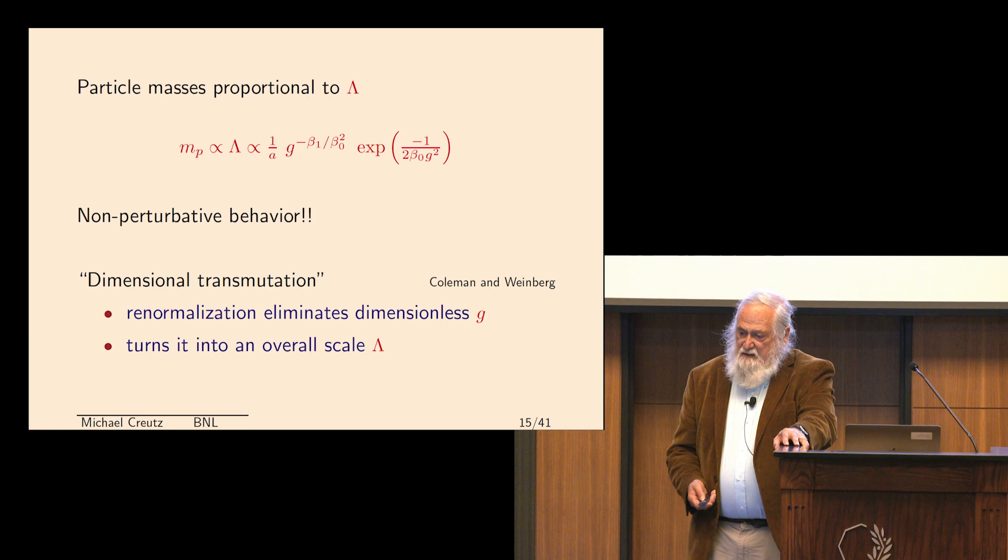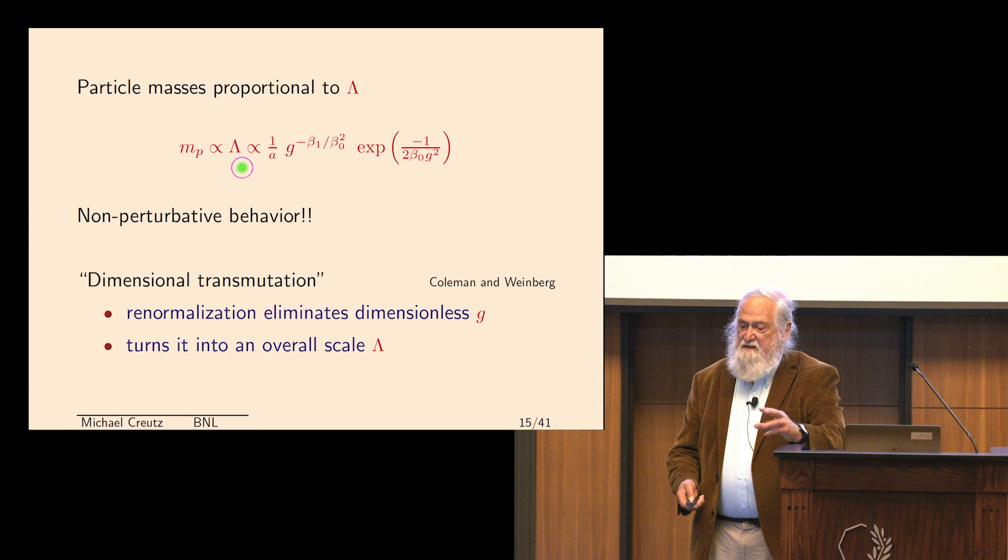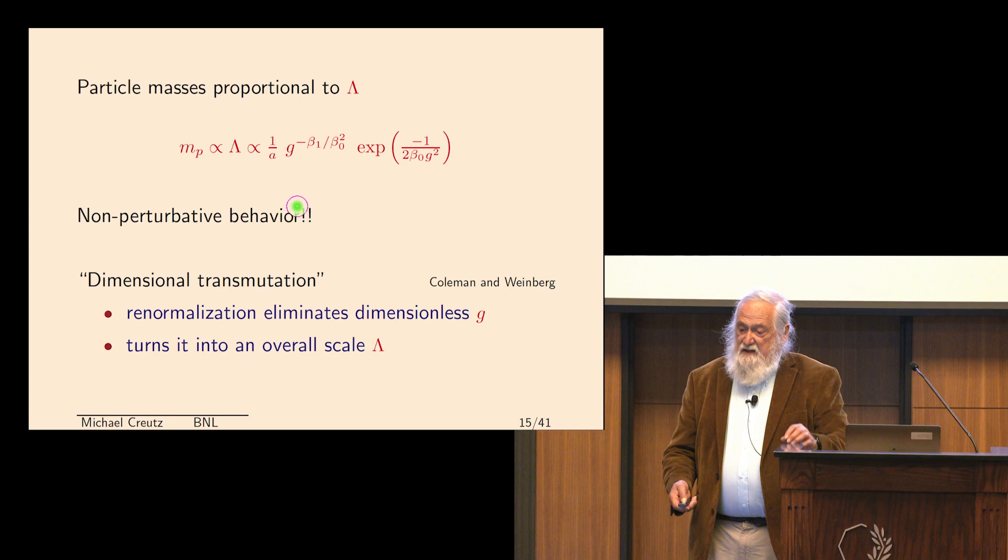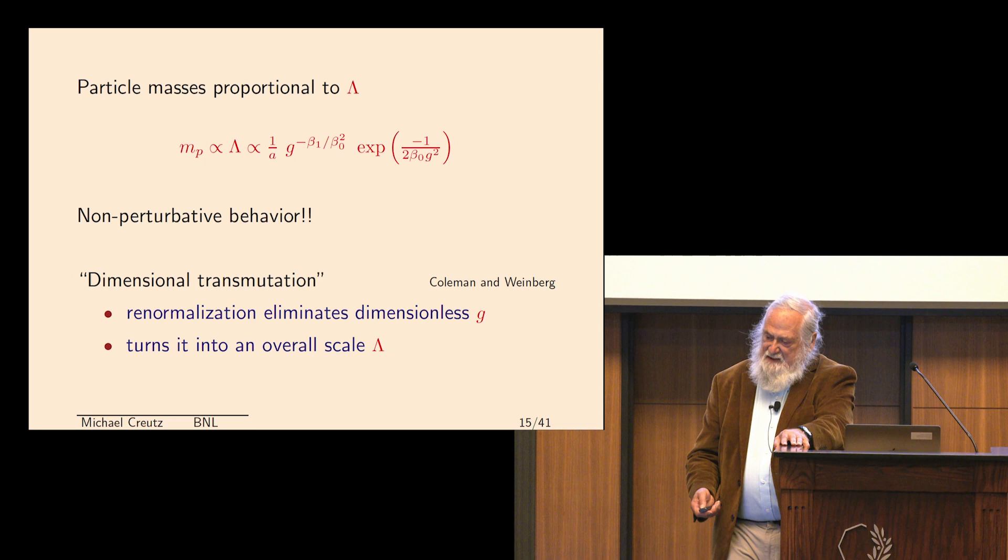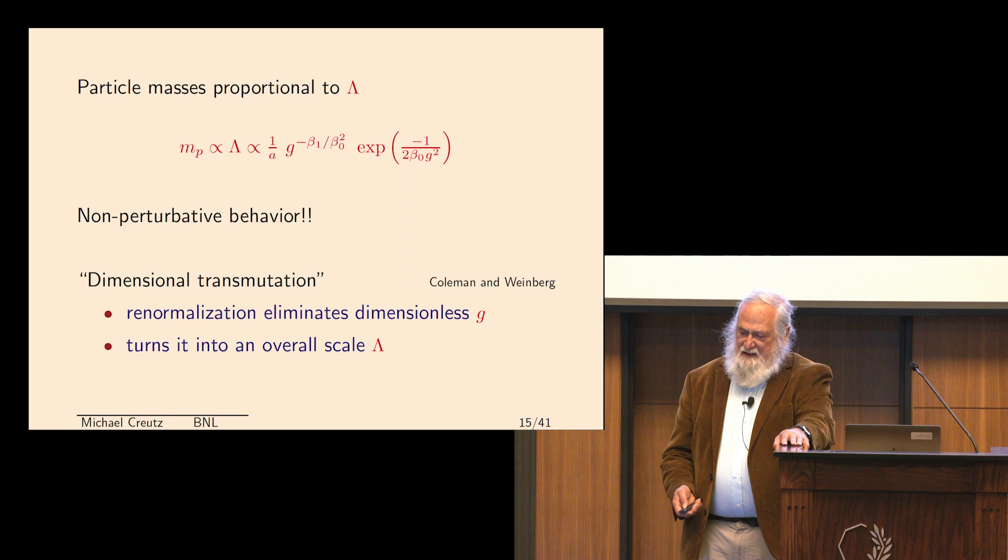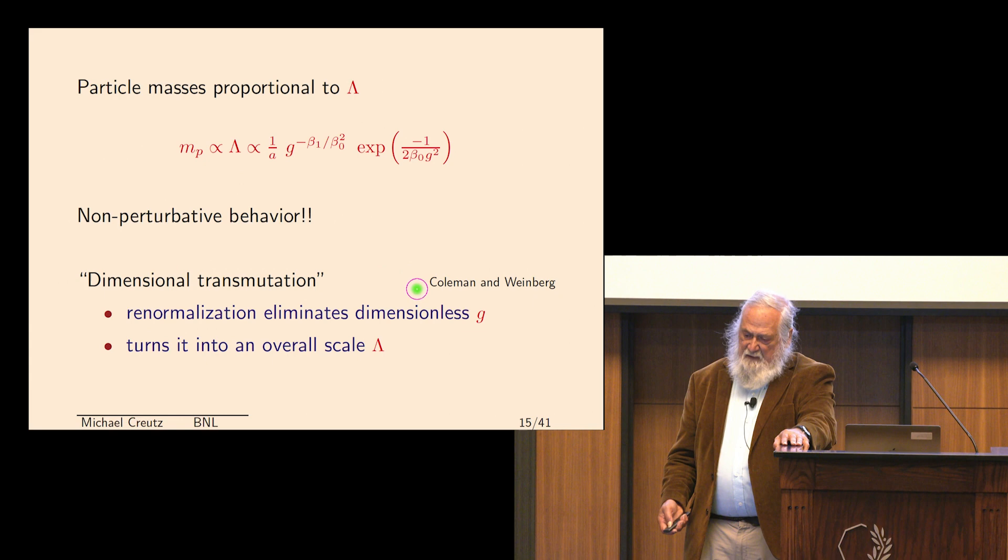Now, particle masses - all the physical, like the proton mass, has to be proportional to this integration constant. So you discover that the mass of the proton is proportional to this, and that's something you have to calculate, but it's proportional to this combination. This is non-perturbative. So you see that there's non-perturbative stuff going on. And this phenomenon of turning a coupling constant into a scale was given a marvelous name by Sidney Coleman, Coleman and Weinberg, and they called it dimensional transmutation. I think it's a very pretty name. So what has happened is that the renormalization procedure has eliminated a dimensionless coupling constant from the theory and replaced it with an overall scale.